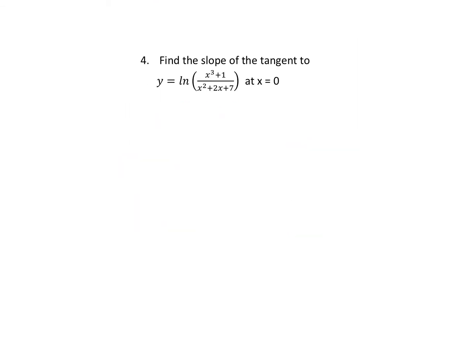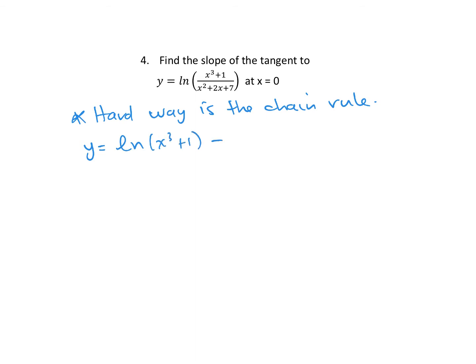This application asks us to find the slope of the tangent to the function at x equals 0. You could use the chain rule, but it's easier to use log laws and separate the quotient inside the log into subtraction. So we find y prime: the derivative of ln(x³ + 1) gives 1 over (x³ + 1) times the derivative of (x³ + 1), which is 3x².